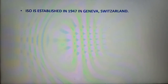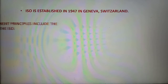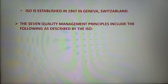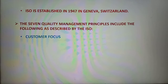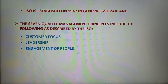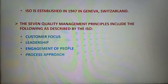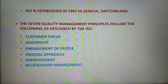ISO is established in 1947 in Geneva, Switzerland. The International Organization for Standardization is an independent non-governmental organization made up of members from the national standards bodies of over 160 countries that set international standards related to products and services. The seven quality management principles described by ISO include: first, customer focus — it is of prior importance as per ISO norms; second, leadership; third, engagement of people in the organization, meaning all stakeholders should engage in work; fourth, process approach; fifth, improvement; sixth, relationship management; and seventh, evidence based decision making.